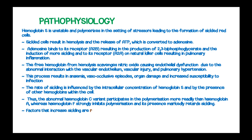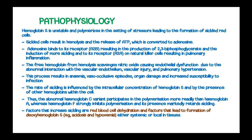Factors that increase sickling include red blood cell dehydration and factors that lead to formation of deoxyhemoglobin S, such as acidosis and hypoxemia, whether systemic or local in tissues. The distribution of the sickle cell gene normally parallels that of Plasmodium falciparum.